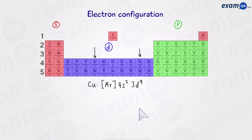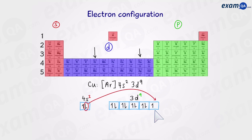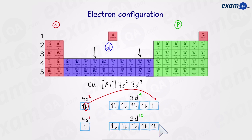The same goes for copper. You might think it's [Ar] 4s², 3d⁹. However, the 3d subshell is almost complete — it just needs one more electron. So it borrows one from the 4s subshell, leaving us with [Ar] 4s¹, 3d¹⁰. It's just chromium and copper that are exceptions, and that covers the majority of electron configuration.